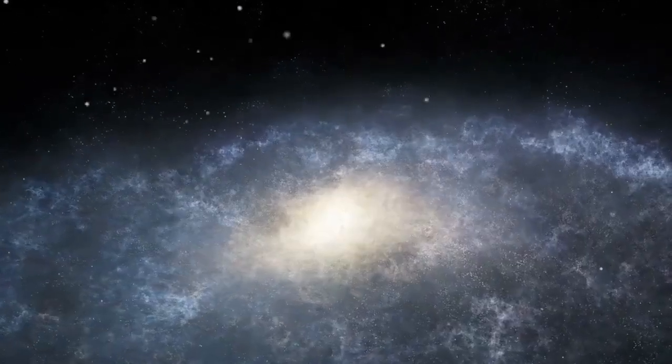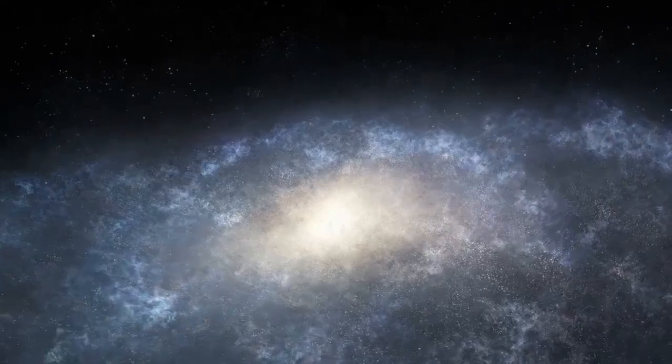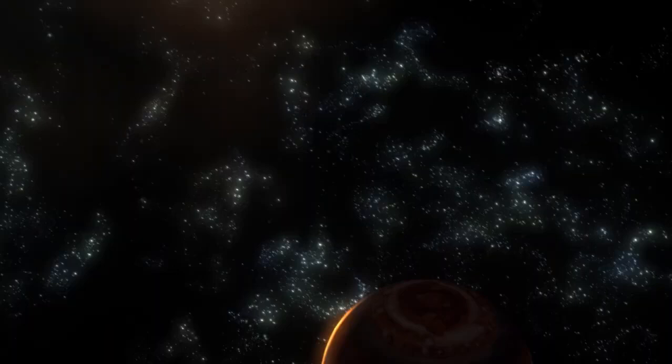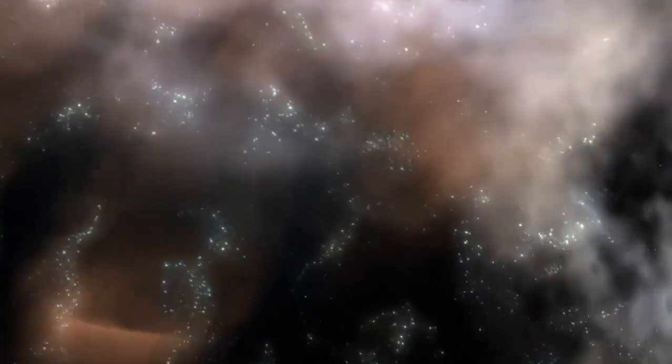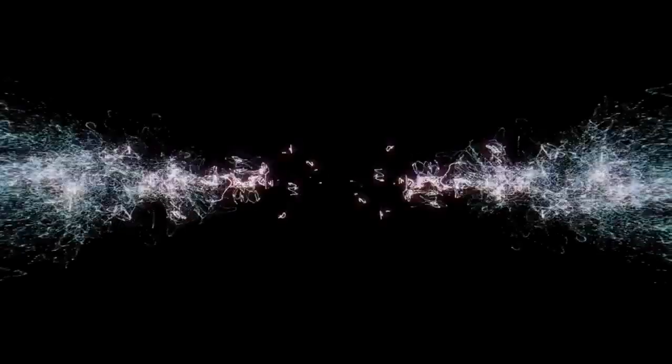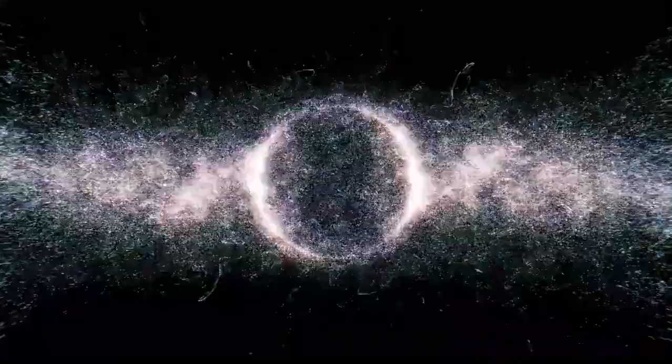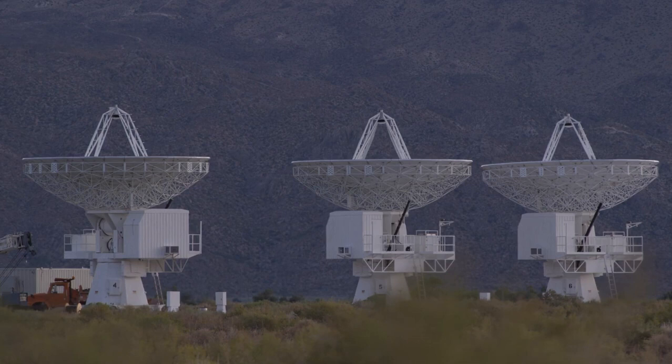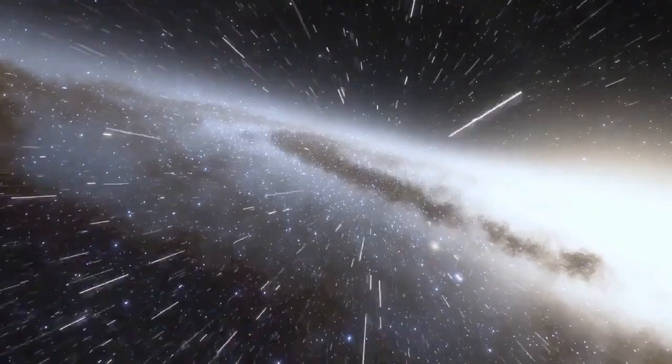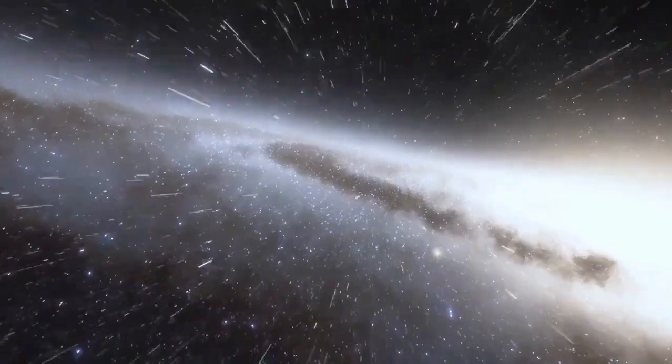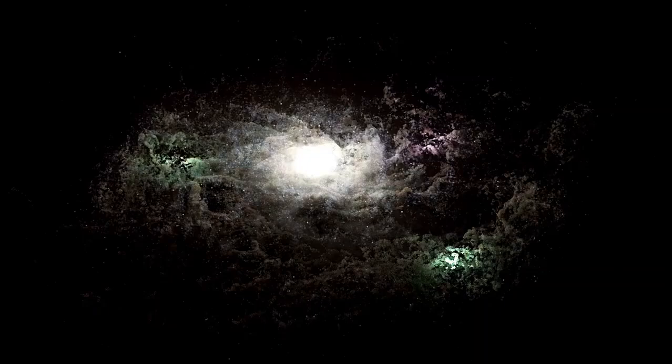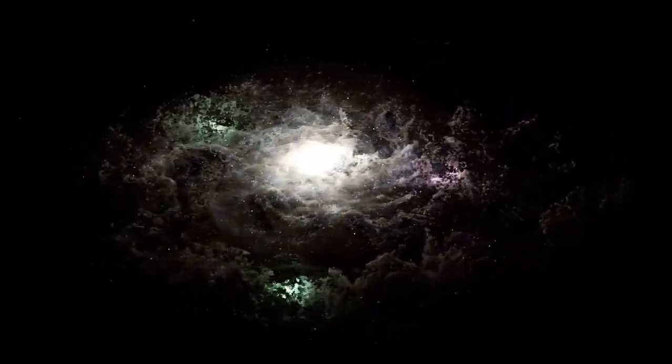The vastness of the universe is truly mind-boggling. The sun, that bright, fiery orb that lights up our days and warms our planet, is actually quite far away from us, sitting at a distance of about 149.6 million kilometers or 92.9 million miles. To make such a vast expanse easier to understand, scientists created a unit of measurement called an astronomical unit, AU. One AU is roughly equal to 149,598,000 kilometers or 92,955,187 miles.